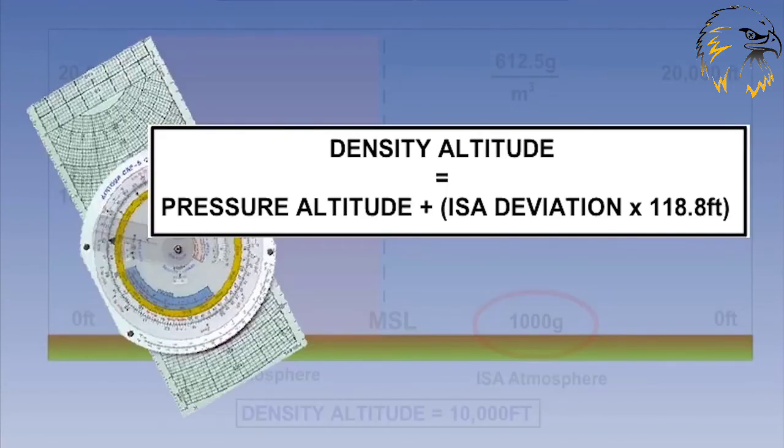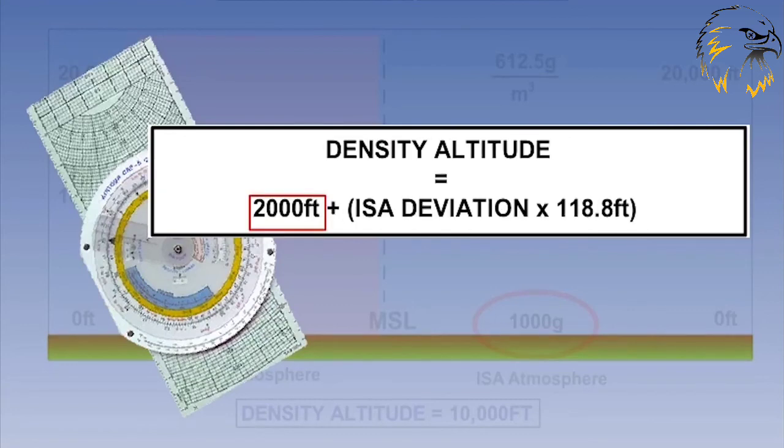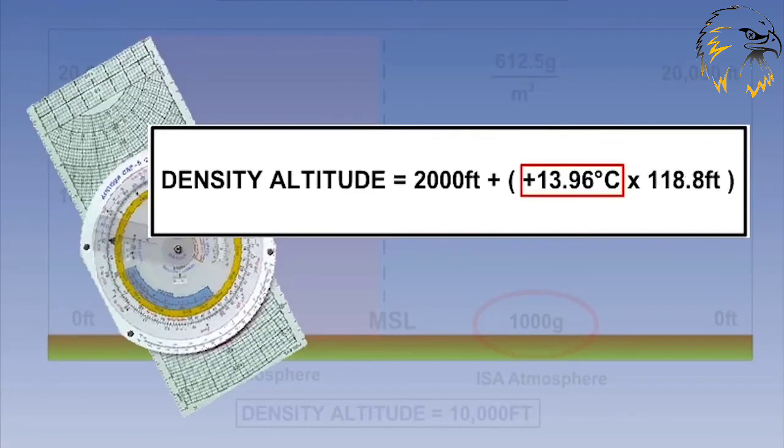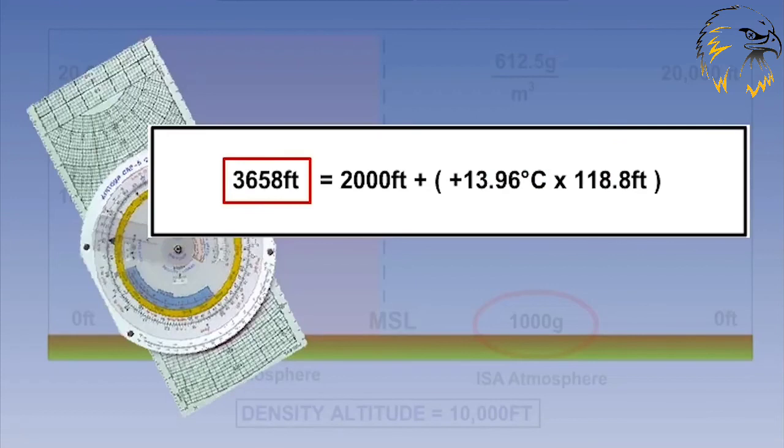There are two simple ways of calculating the density altitude. One method is by using a flight navigational computer and the other is by using a simple numerical formula. This formula states that for every one degree Celsius away from ISA, depending on whether the deviation from ISA is positive or negative, you add or subtract 118.8 feet to your pressure altitude to find your density altitude. Now let's look at an example. Let's say the pressure altitude is 2,000 feet and the temperature is 25 degrees Celsius. This means the atmosphere is 13.96 degrees warmer than ISA. Therefore, the ISA deviation is plus 13.96 degrees Celsius. We can now see that the density altitude is 3,658 feet.